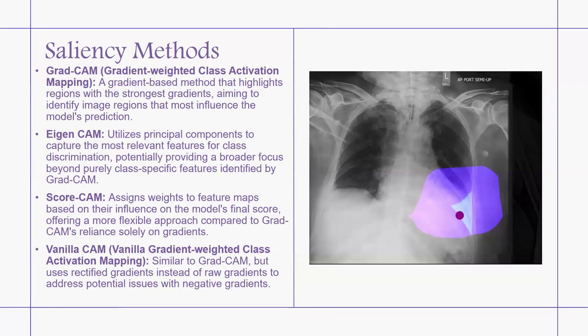We will briefly look at each method. Grad-CAM, which is the Gradient-Weighted Class Activation Map, is a gradient-based method that highlights regions with the strongest gradients, aiming to identify image regions that most influence the model's prediction. IGN-CAM utilizes the principle of components that capture the most relevant features for class discrimination, potentially providing a broader focus beyond the purely class-specific features identified by Grad-CAM.